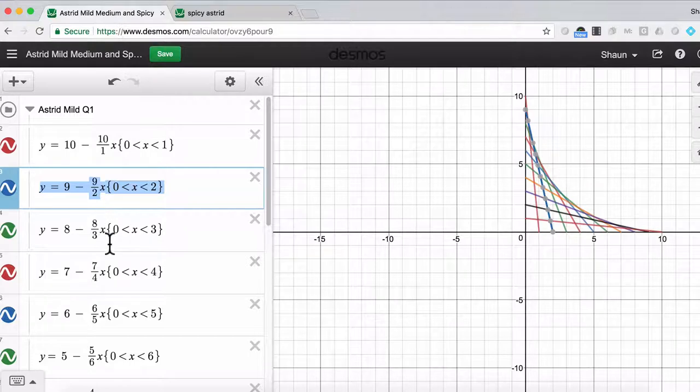9 over 2, 8 over 3, and the domains are constrained from 0 through 1, then 0 through 2, and so on and so forth.